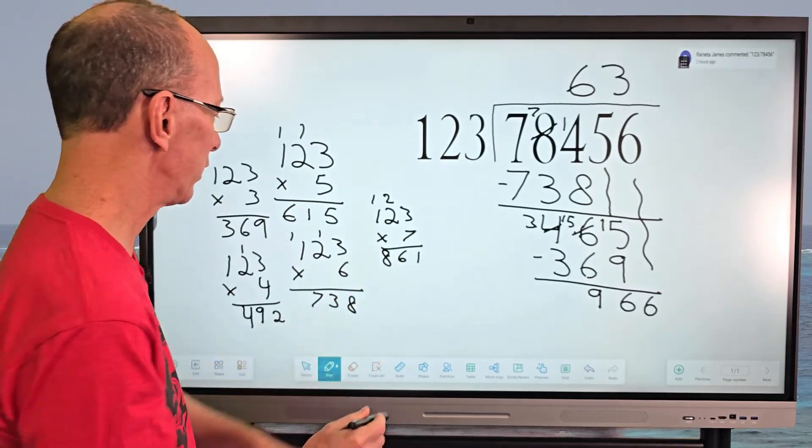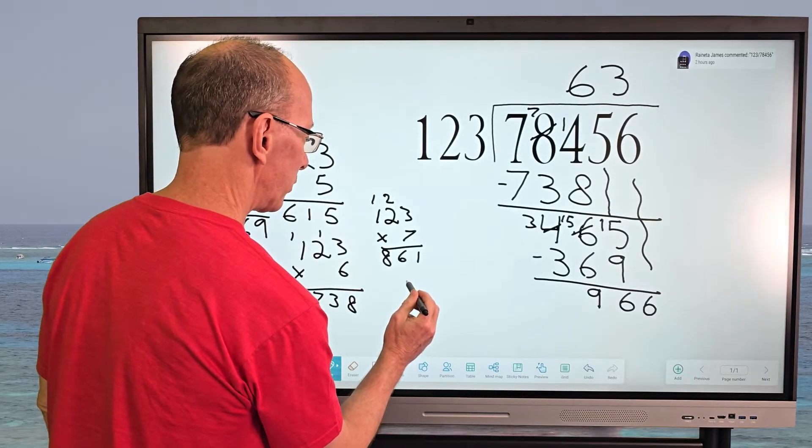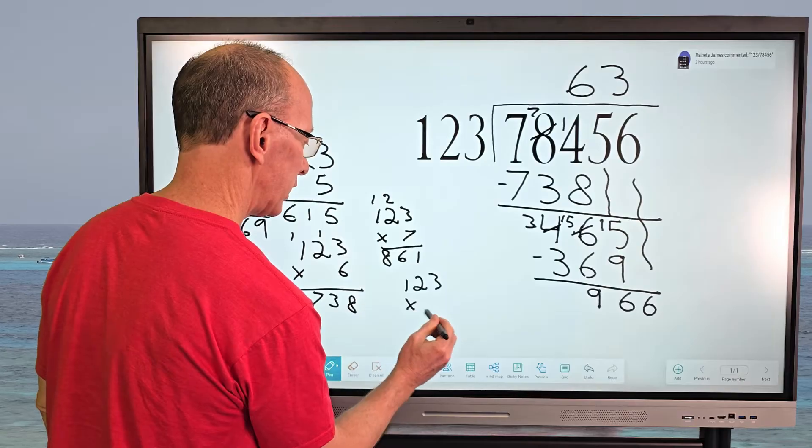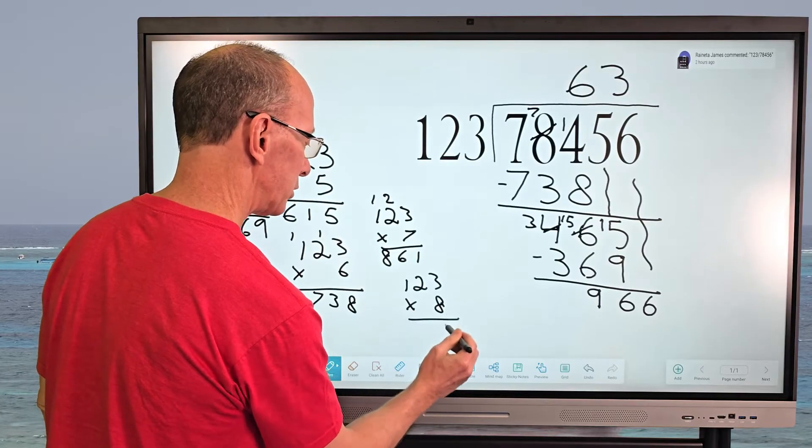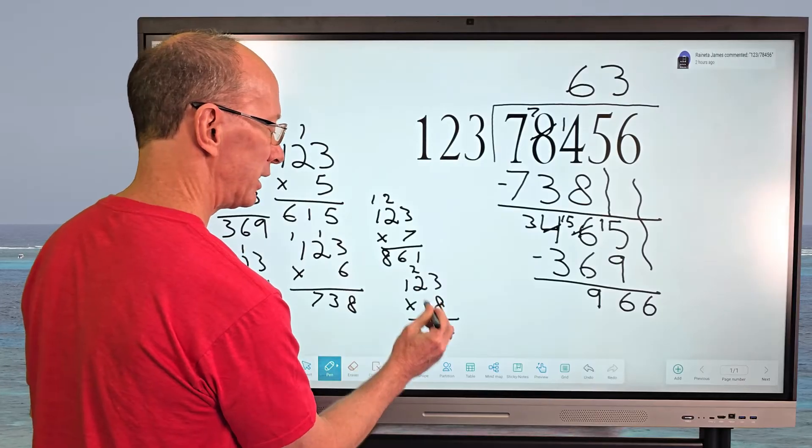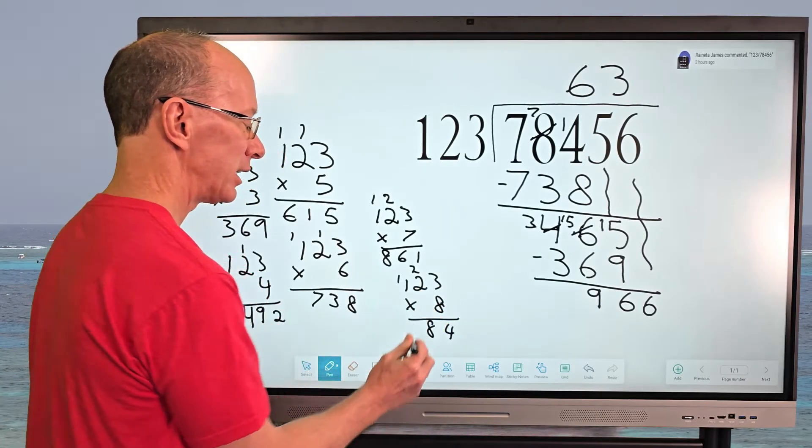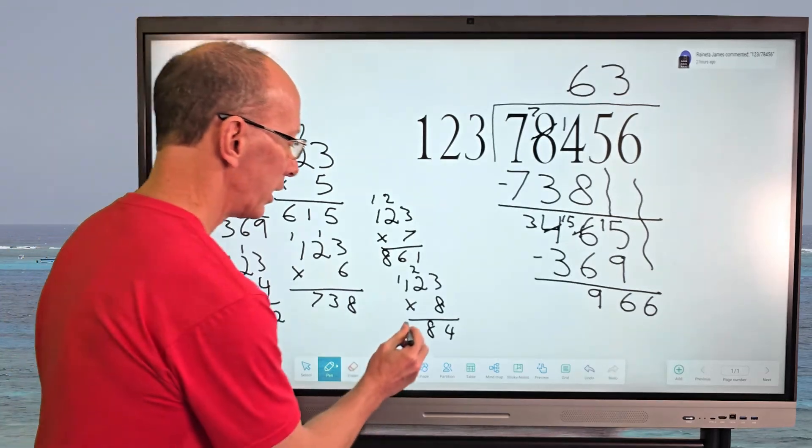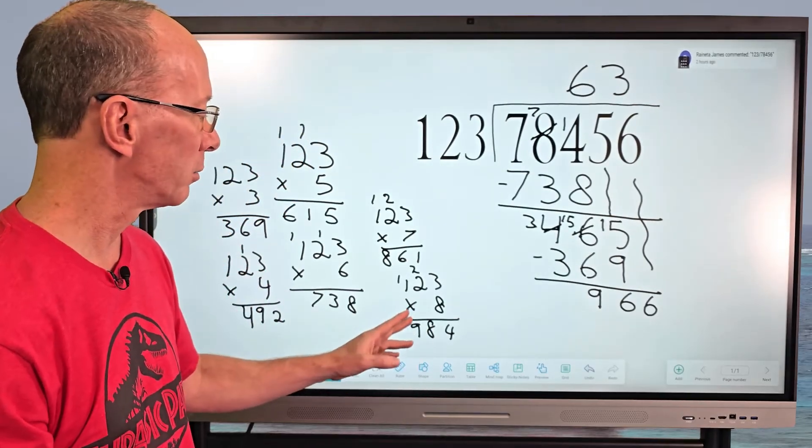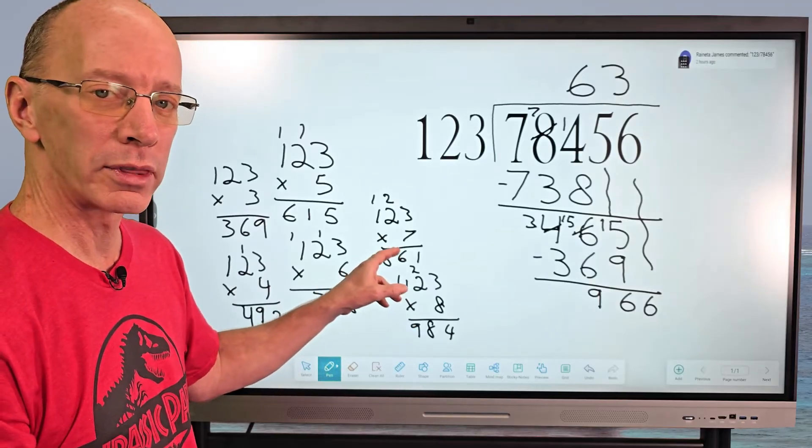So do I have anything that will fit into 966? I have 123 times seven. And I want to show you what 123 times eight is. So let's go ahead and do that 123 times eight. So eight times three is 24. Carry the two and then eight times two is 16 17 18. Carry the one and then eight times one is eight plus the one would be a nine. So I have 984, which is a little bit too big. We're just going to stay with the seven.